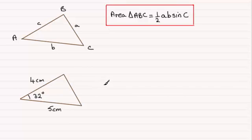When it comes to working out the area, we can say that therefore the area of the triangle is equal to a half times the product of the two sides, that's 4 times 5, or obviously 5 times 4, it makes no difference, times the sine of the included angle, which is 32 degrees.